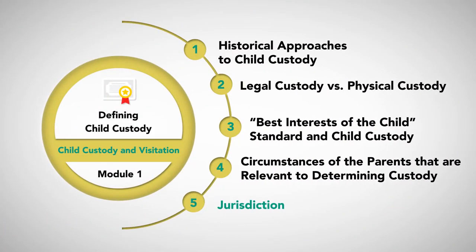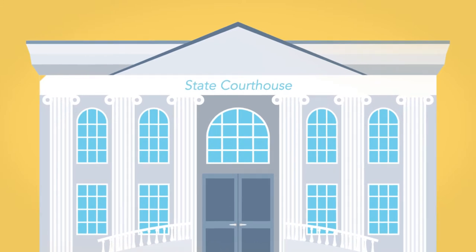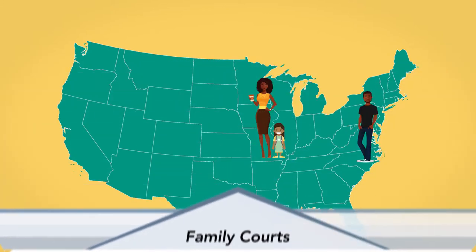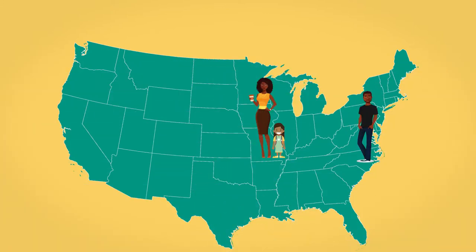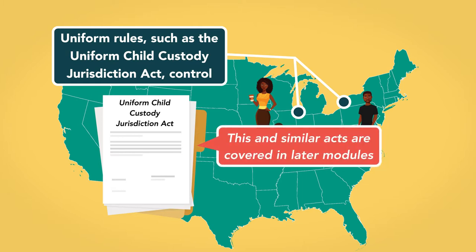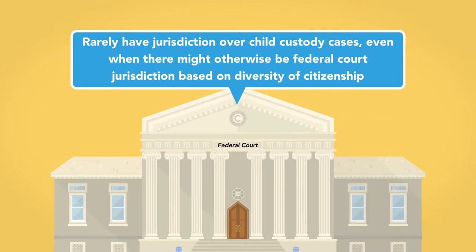As with other domestic relations issues, child custody determinations are almost always made by state courts, usually by specialty courts called family courts or with comparable names. Where families live in multiple states, or where there is a question as to which state can enforce a child custody determination, uniform rules such as the Uniform Child Custody Jurisdiction Act control. This and similar acts are covered in later modules.